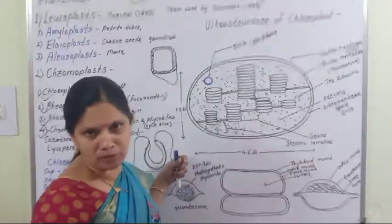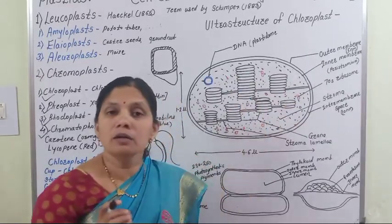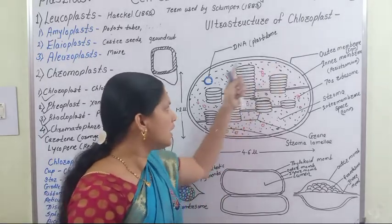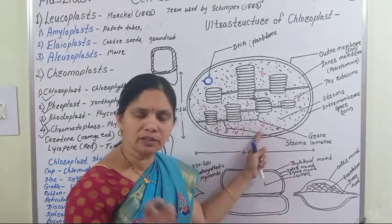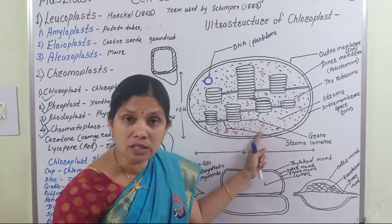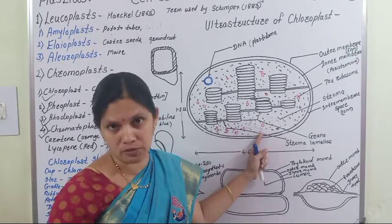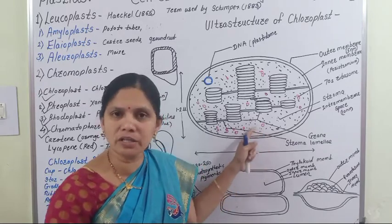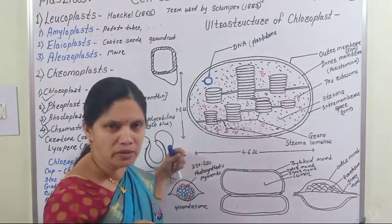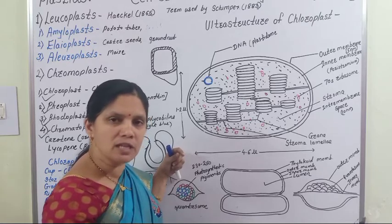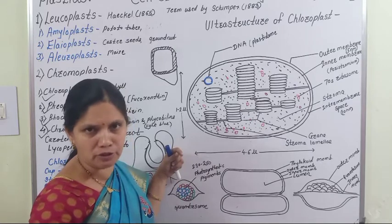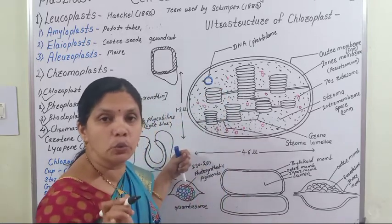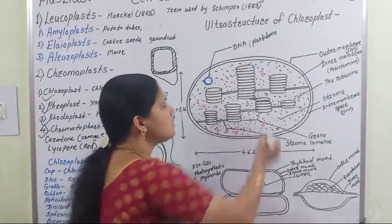The stroma contains different enzymes which are essential for the dark reaction. In the stroma, various enzymes are present, and out of all these enzymes, the Rubisco enzyme is abundantly present in the stroma — about 15% Rubisco enzyme is present — which fixes carbon dioxide.